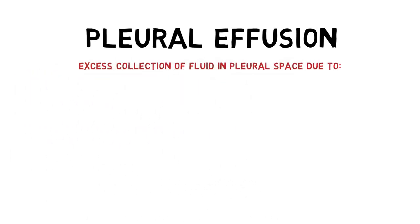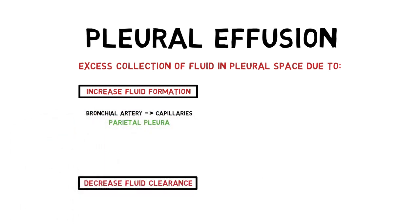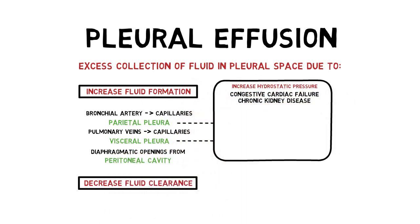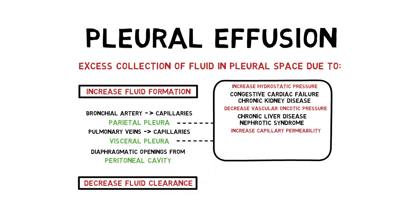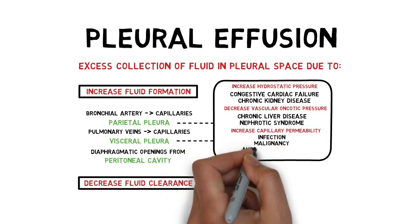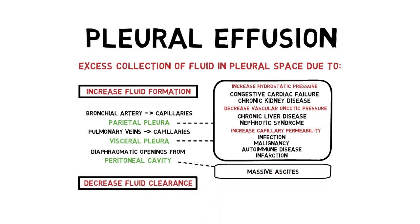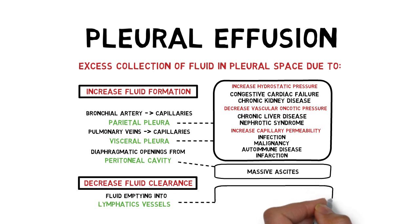Next is pleural effusion, which simply means excess collection of fluid in the pleural space. It can be due to increased fluid formation or decreased fluid clearance. Fluid can enter from the parietal pleura, visceral pleura, or peritoneal cavity. It escapes the capillary due to hemodynamic disturbance such as increased hydrostatic pressure in congestive heart failure or chronic kidney disease, or decreased vascular oncotic pressure in chronic liver disease or nephrotic syndrome due to hypoalbuminemia. Inflammation can also increase capillary permeability — from infection, malignancy, autoimmune disease, or pulmonary infarction. Fluid from the peritoneal cavity can cross into the pleural space via diaphragmatic openings, as seen in massive ascites.